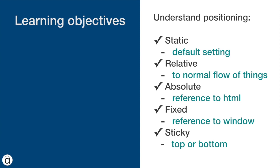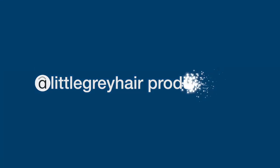So hopefully you've got an understanding of CSS positioning now. Static is the default setting so we don't have to code anything. Relative is relative to the normal flow of things. Absolute is a reference to the HTML tag in our code. Fixed is reference to the user's window or device. And finally sticky — you can stick elements to the top or bottom. That's it for CSS positioning. Hope you enjoyed this video. I'll see you in the next one.